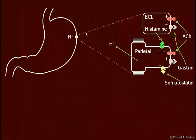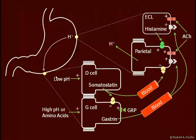Parietal cells are found in the fundus, the upper region, and the corpus, or body, of the stomach. Down in the antrum, the lower part of the stomach, we find G cells and D cells. G cells secrete gastrin. They are stimulated by GRP from the enteric nervous system, and also by high pH, an alkaline environment in the stomach, and by the presence of amino acids — all of these trigger gastrin secretion.